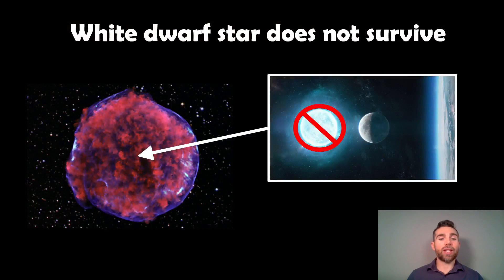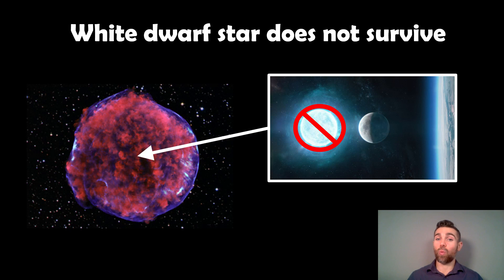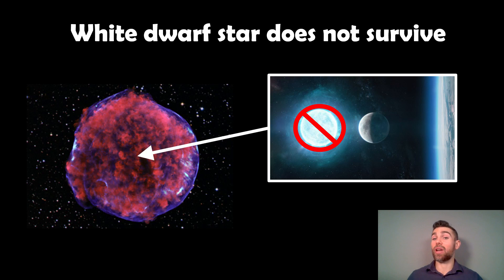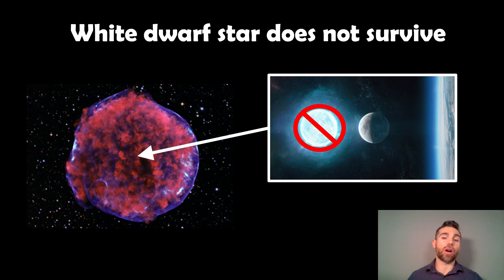A Type 1a doesn't typically leave anything behind — the white dwarf star is completely destroyed and doesn't survive. The red giant star would survive, but it may have its outer layers stripped by the supernova and be given a velocity kick, so it's thrown out into space from where it was. It will lose its outer layers and then it's moving much faster.